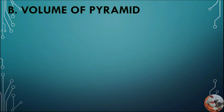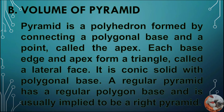Letter B: Volume of Pyramid. A pyramid is a polyhedron formed by connecting a polygonal base and a point called the apex. Each base edge and apex form a triangle called a lateral face. It is a conic solid with a polygonal base. A regular pyramid has a regular polygon base and is usually implied to be a right pyramid.